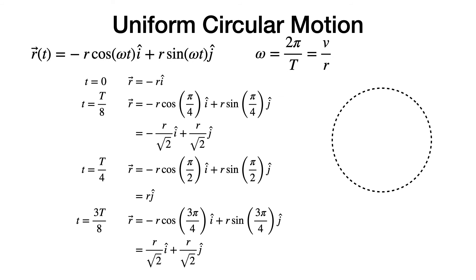To verify this, let's check a few specific examples. At t equals 0, cosine of 0 is 1 and sine of 0 is 0, so the position vector equals minus r i-hat, pointing towards the left edge of the circular path. This is where the particle starts its motion at t equals 0.